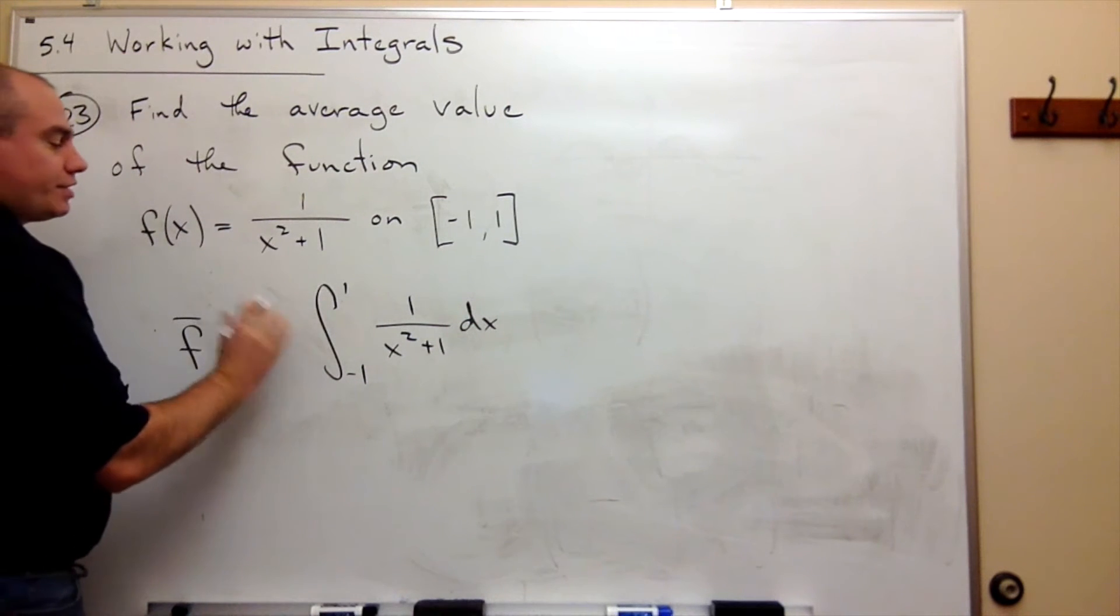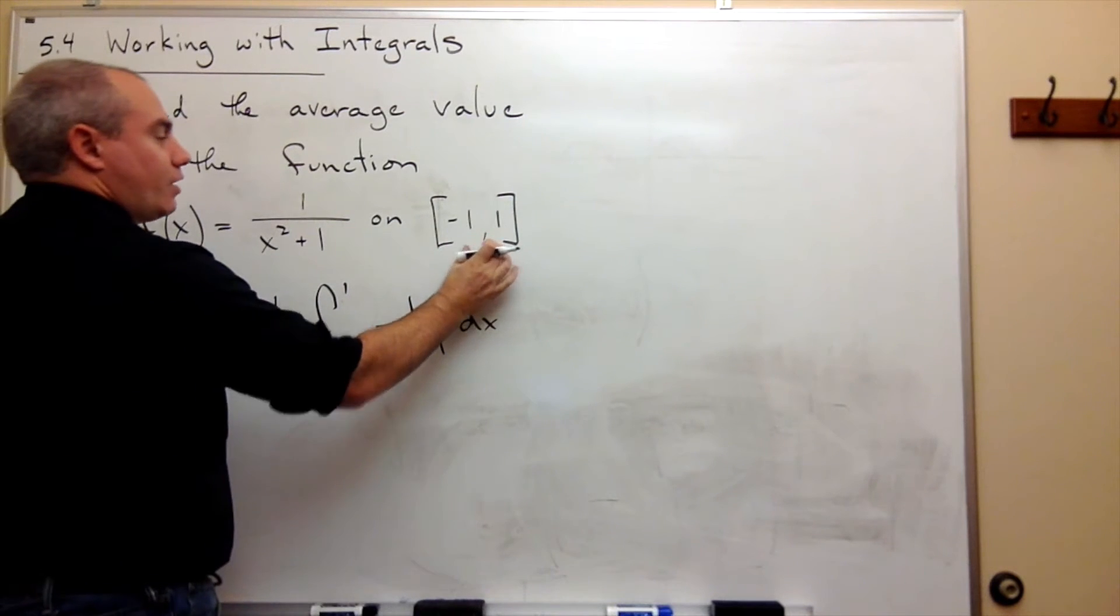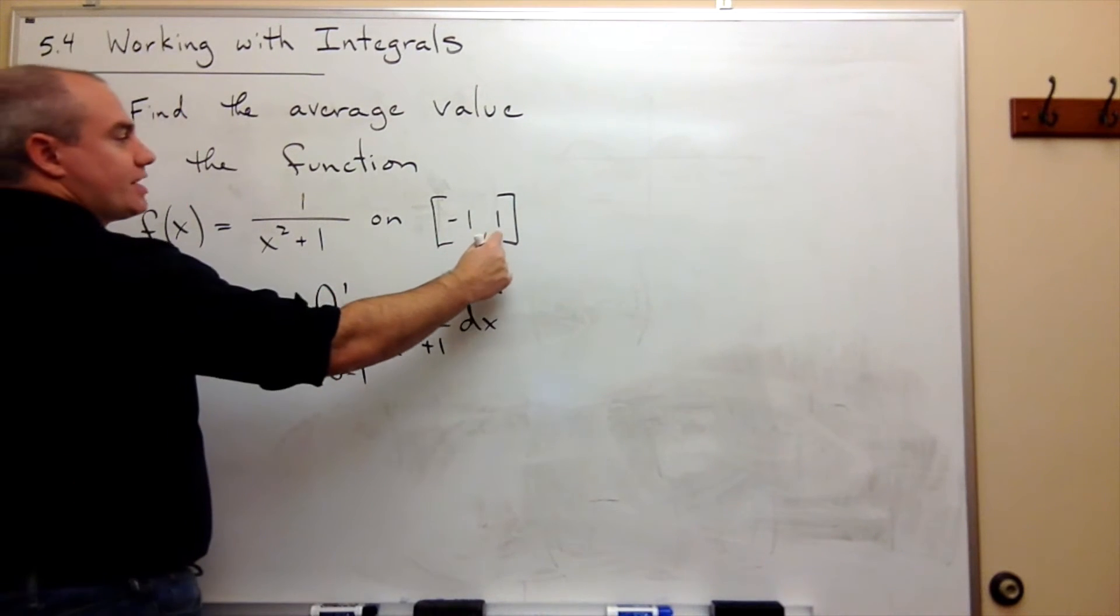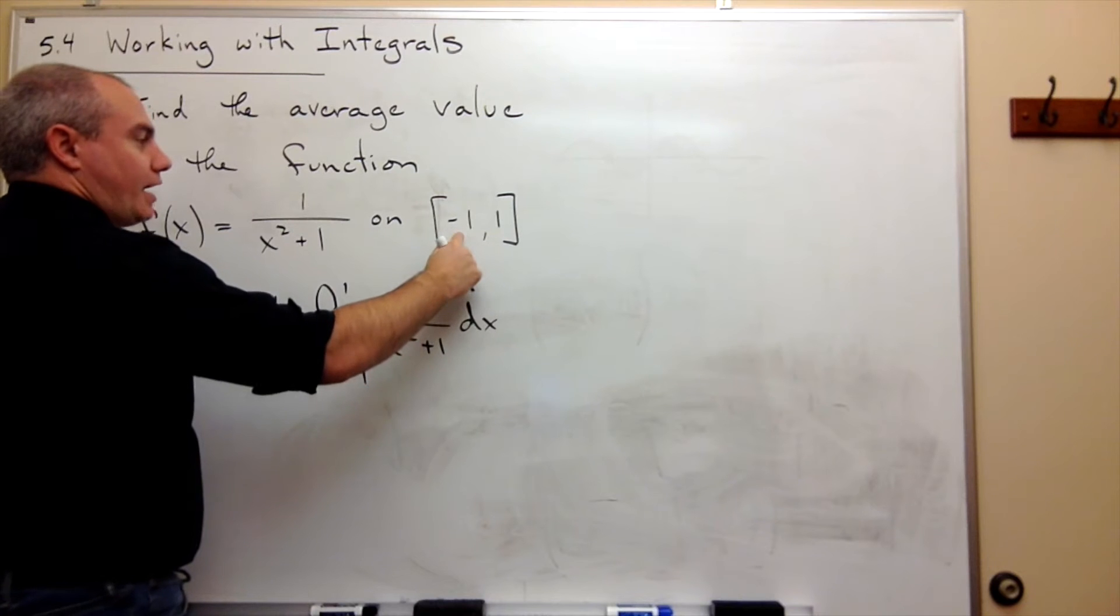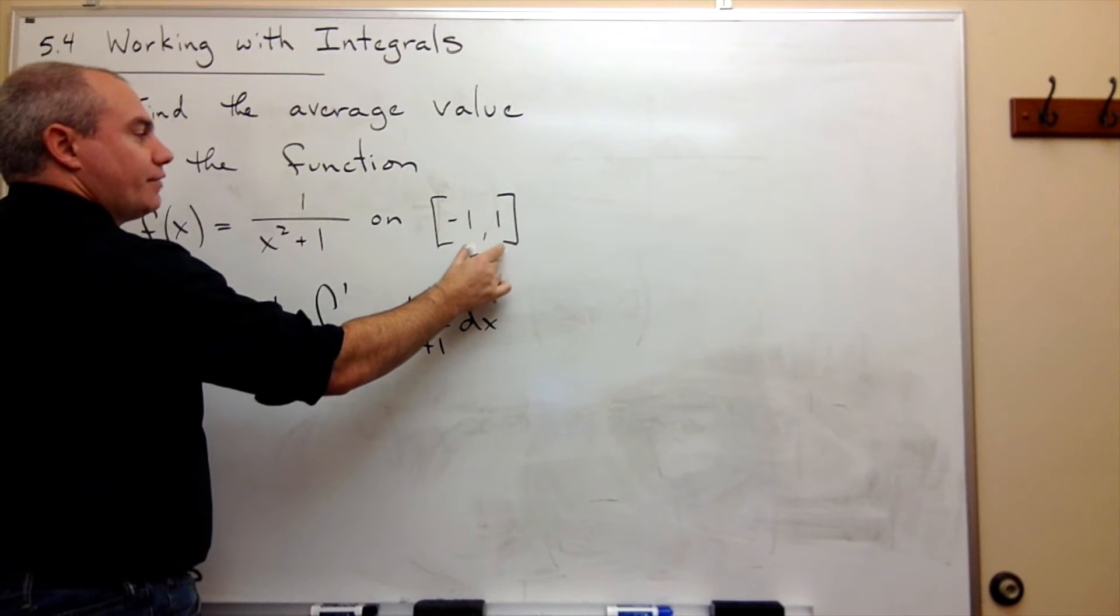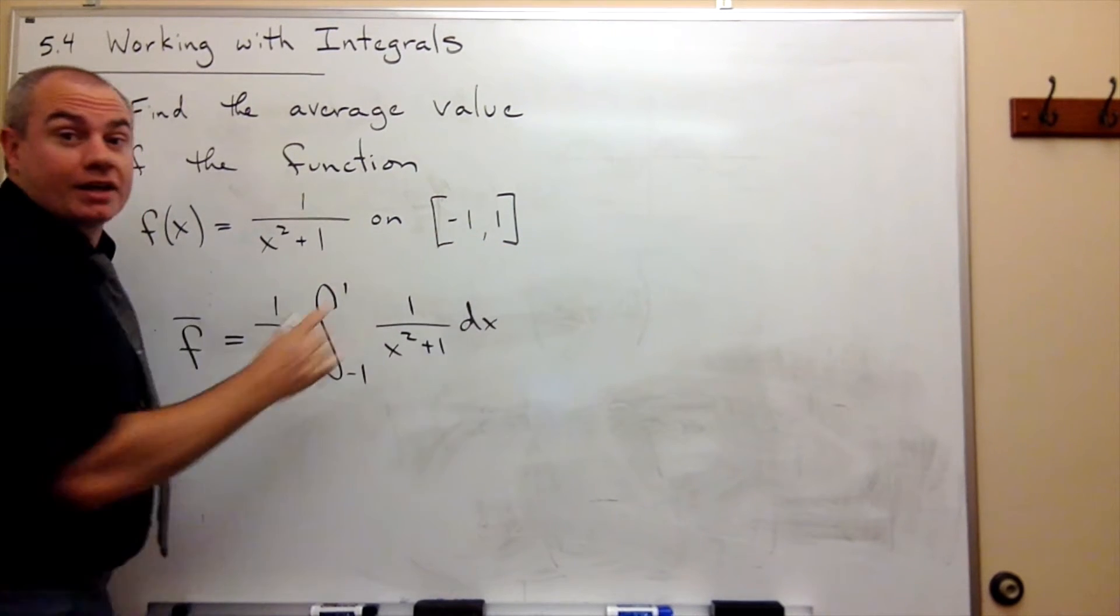but then we multiply that by 1 over the length of the interval. If you'd prefer, you could say b minus a, but really it's just the length of this interval. We can see that the length of that interval is 2,